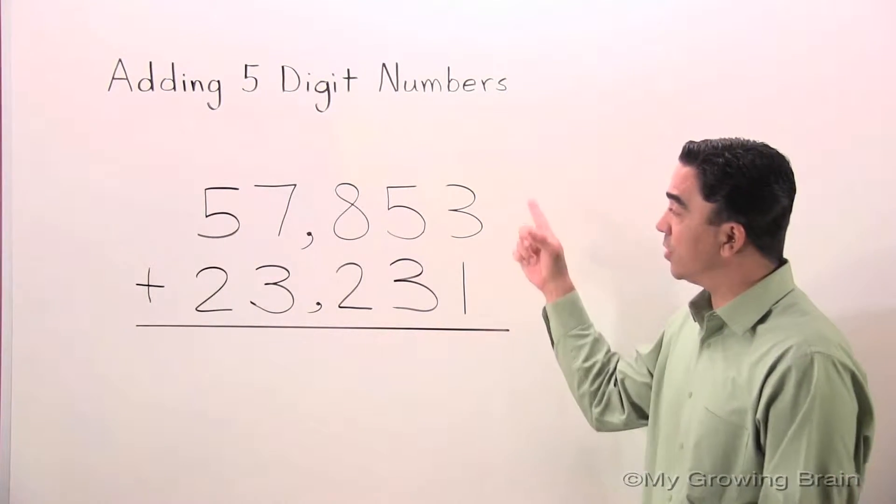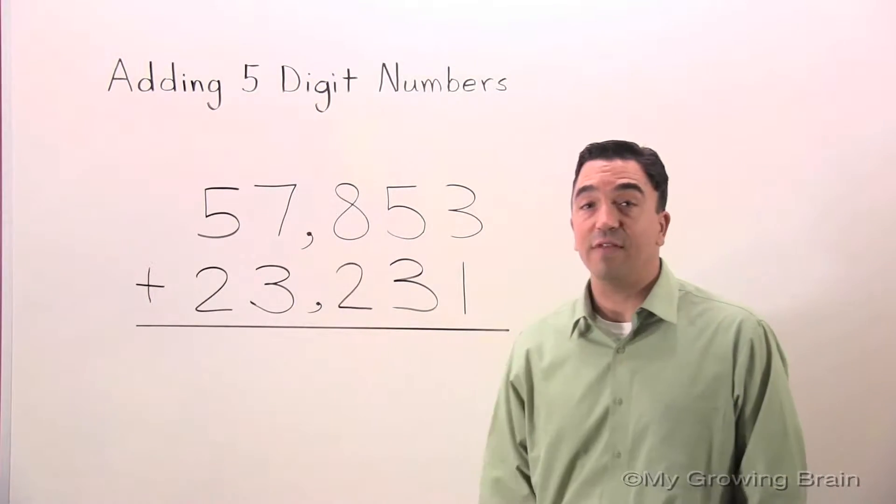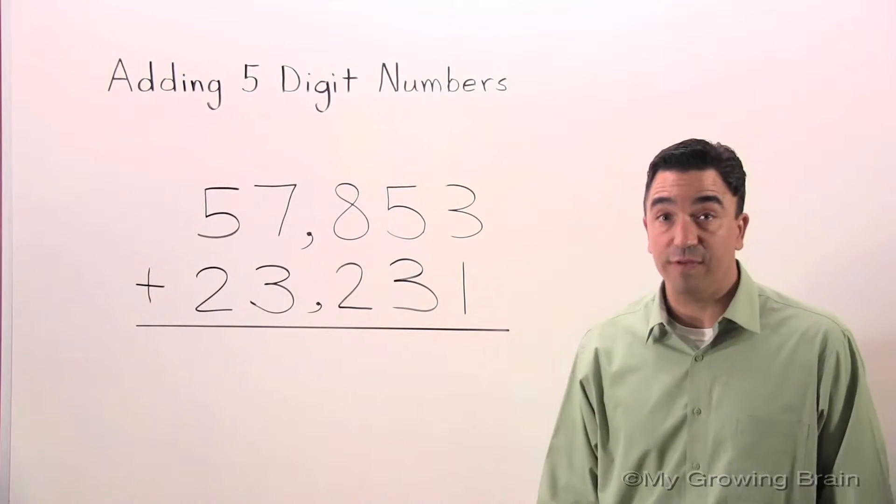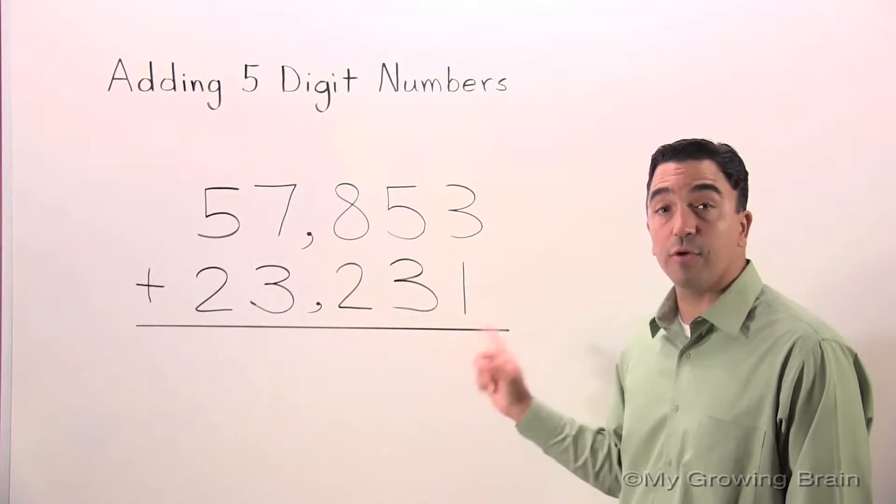On the board, you will notice I have two five-digit numbers: 57,853 and 23,231.